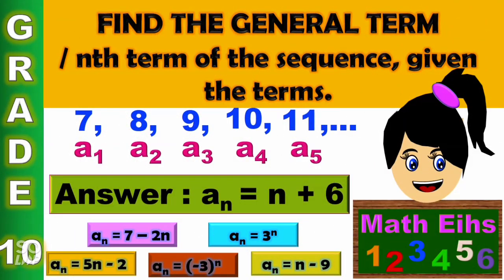Our lesson for today is to find the general term or nth term of a sequence given the terms. This is for Grade 10 math, first quarter. Given the terms, you're going to find the general term or the nth term. For example, we have 7, 8, 9, 10, 11 — the general term is a sub n equals n plus 6. So that is our lesson for today.